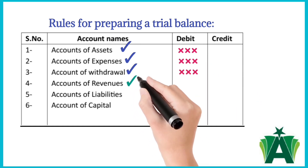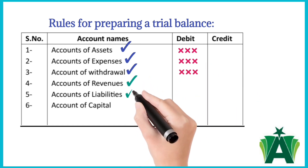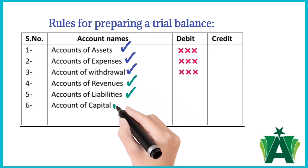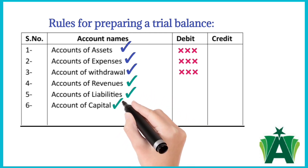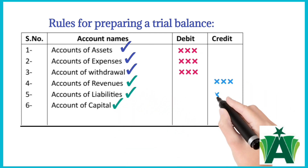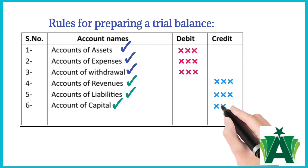Accounts of revenues, accounts of liabilities, and an account of capital normally have credit balances and are recorded in the credit column of the trial balance.